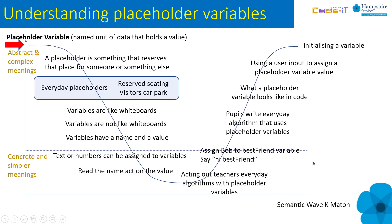You're looking at a semantic wave which is great for thinking about curriculum sequencing. The idea is to take a complex idea such as a placeholder variable and unpack the concepts until we get to the most concrete examples and simplest meanings. Starting at the red area you can see us doing that on the downward curve from left to right.